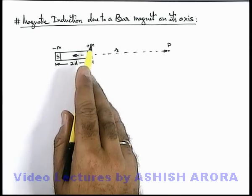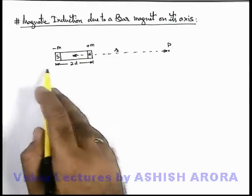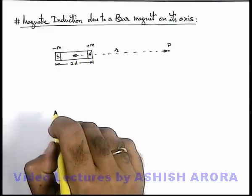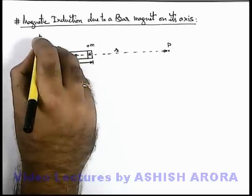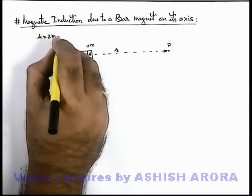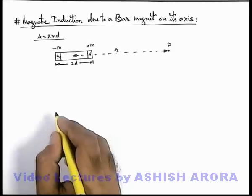Here the pole strength we consider as m for the two poles and the separation is 2d. So here the magnetic dipole moment mu we can write as 2md. If required, we'll replace it.